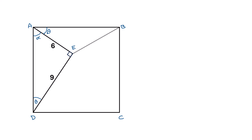So alpha plus theta is equal to 90 degrees. Now extend AE by 3 units. Consider this new point as F, where this extension is 3. Now join F and B.